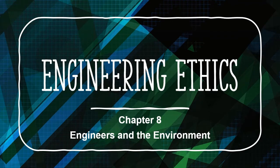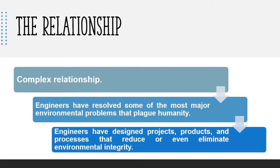Hello and welcome to the final chapter of the engineering ethics course, where we will discuss the relationship between engineers and the environment. To put it in simple terms, it's complicated. Engineers truly have a complex relationship with the environment. On one end, engineers have provided solutions for big environmental issues such as the ozone hole, but on the other end, they created a multitude of environmental issues like the ozone hole through the excessive use of chlorofluorocarbons, or CFCs.